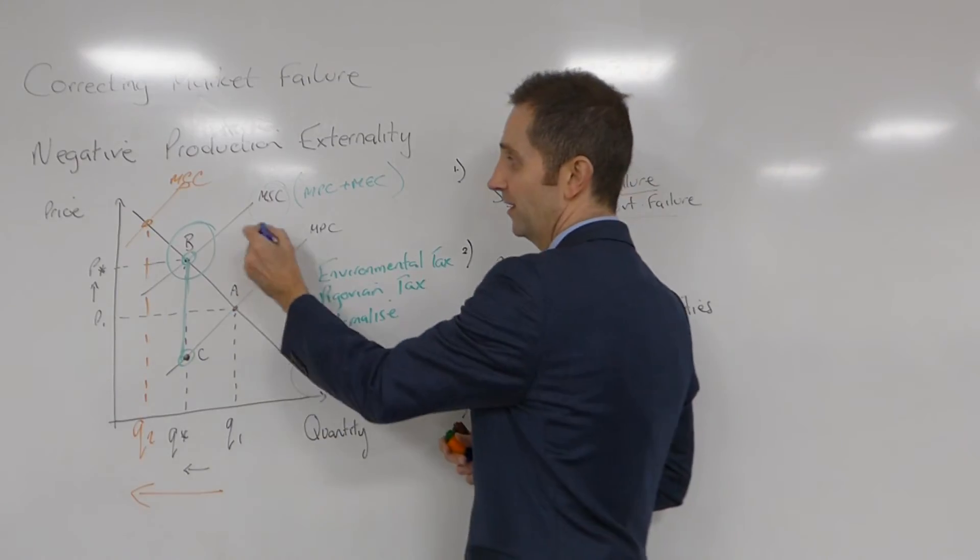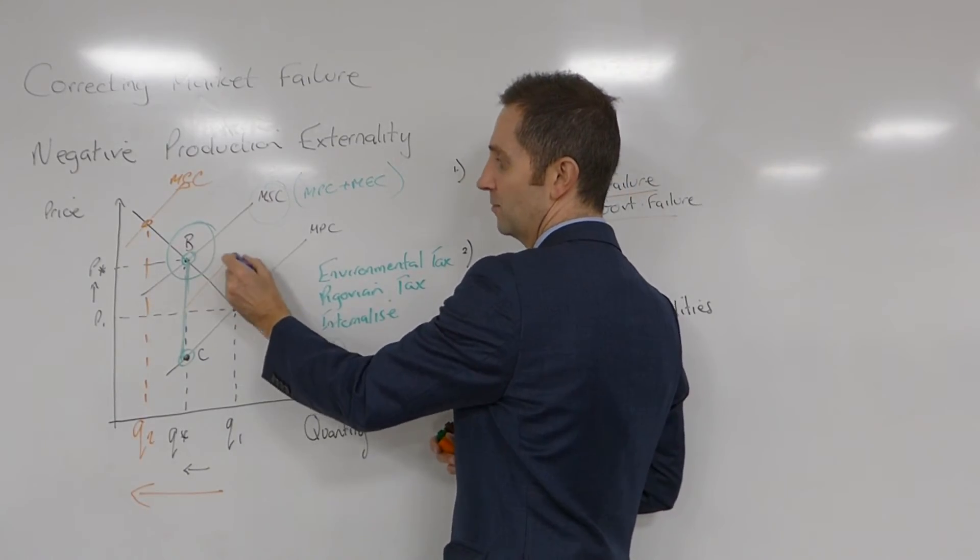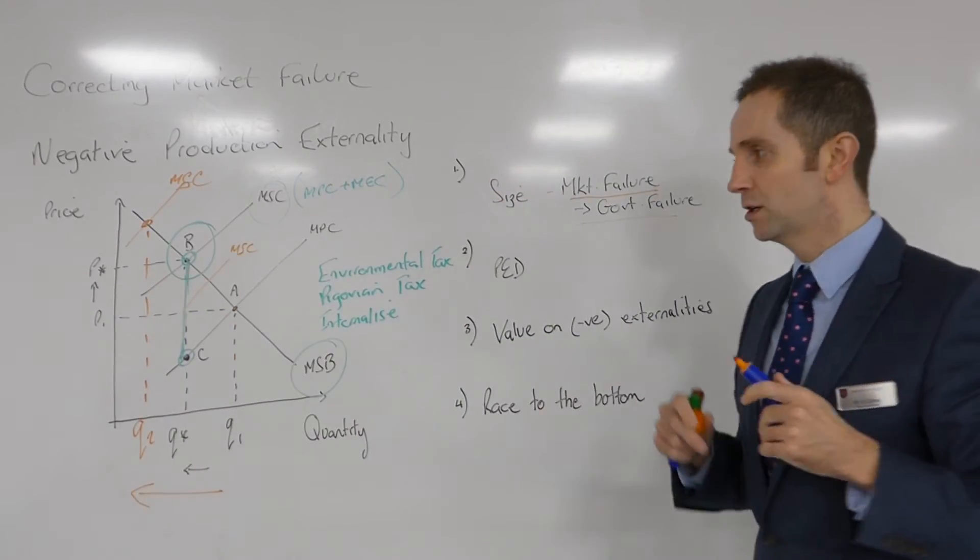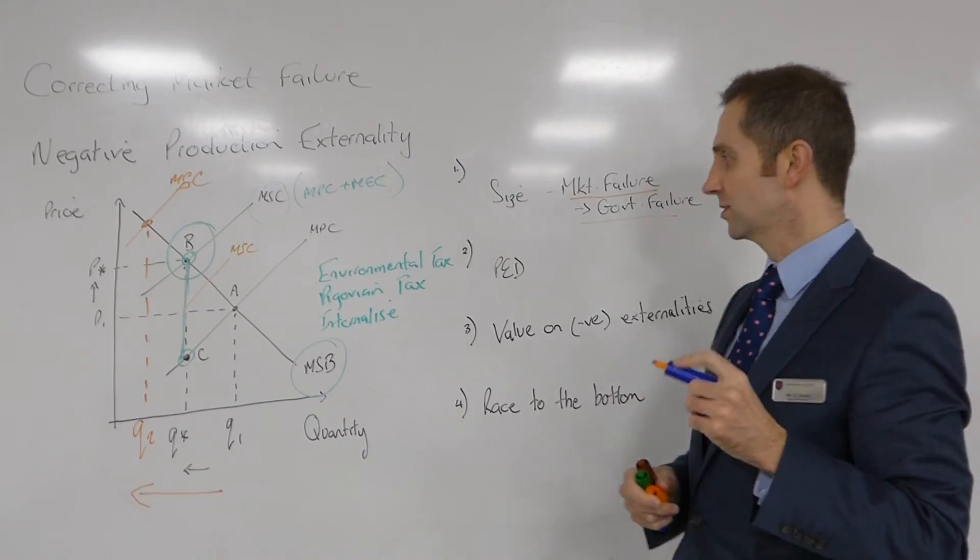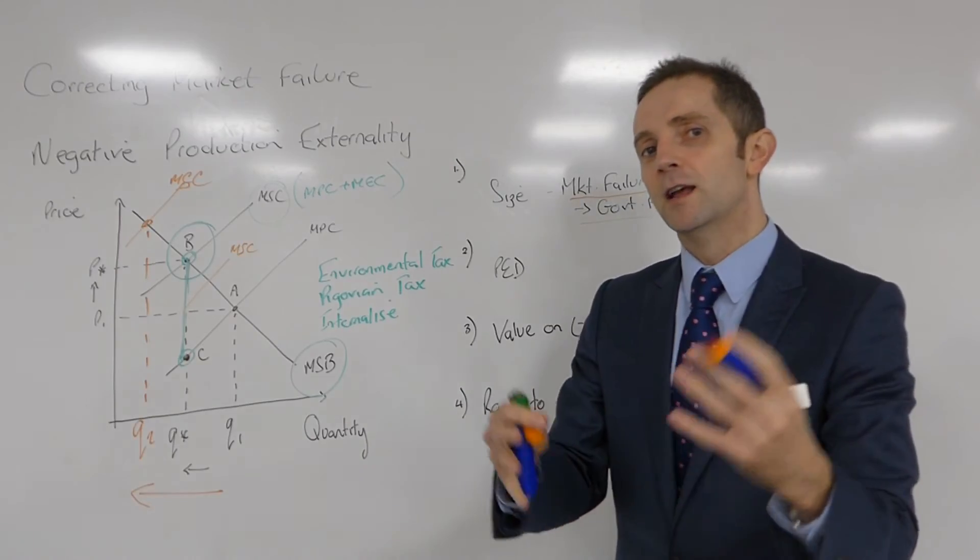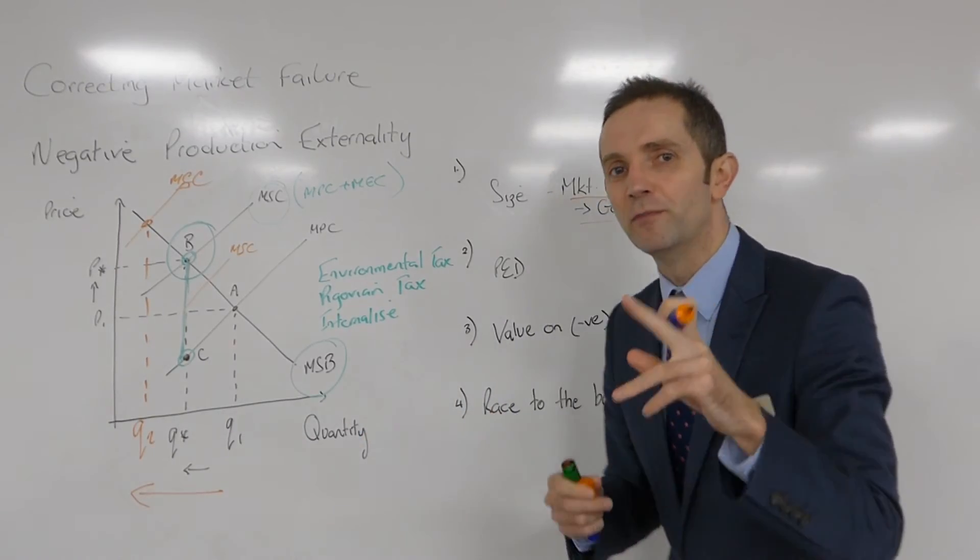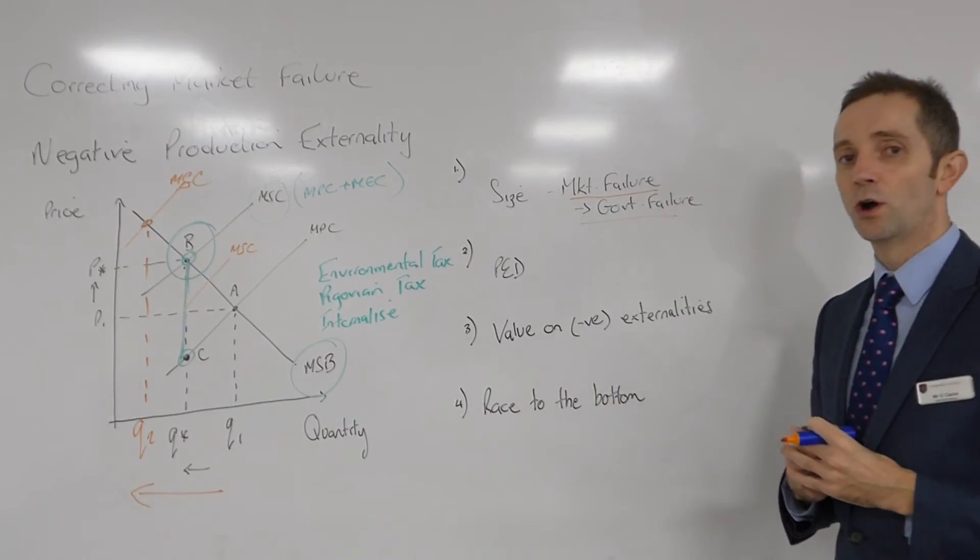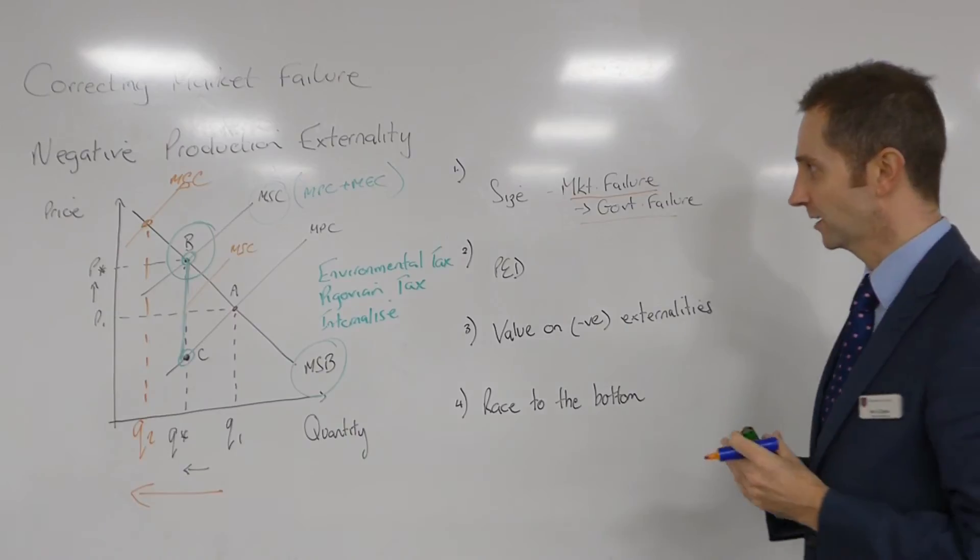So you need to think about that. Also think, well, if they underestimated it, then MSC might end up here, and there would not be enough of a reduction in output. So that's something to consider: market failure becoming government failure. The government getting its calculations wrong and not introducing the correct level of taxation.